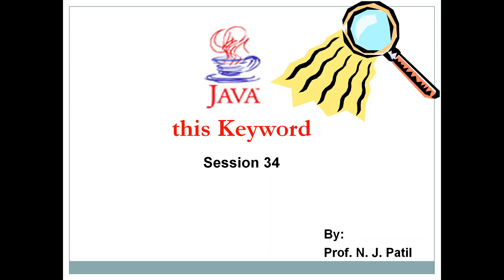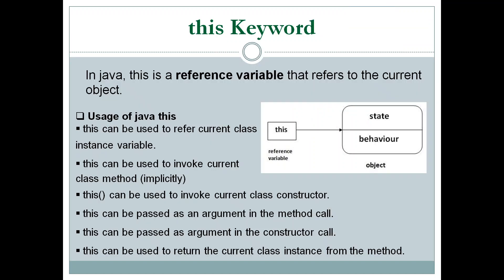In the last session we studied the final keyword in Java. Today we will study another important keyword: the 'this' keyword. In Java, 'this' is a reference variable that refers to the current object of a class. As you can see in the diagram, we have an object which contains state and behavior, and a reference variable 'this' which refers to that object.